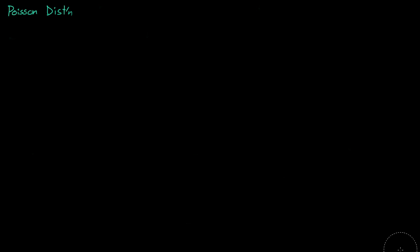This is a quick video of the Poisson distribution. What we'll see is that the Poisson distribution is a subset of the binomial distribution. The probability of x equaling little x for a binomial distribution is equal to n choose x, times the probability of success to the power of the number of successes we want, times the probability of failure, so 1 minus p to the n minus x. And remember, for a binomial distribution the expected value of x is equal to n times the probability.